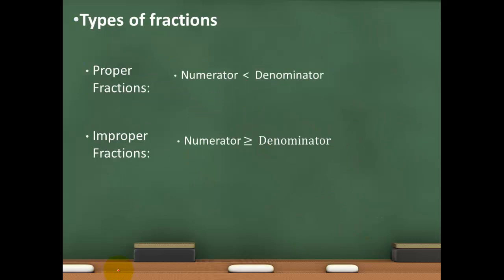I want to talk about the types of fractions we can have. There are two types. We have proper fractions, where the numerator is smaller than the denominator. For instance, two-fifths — 2 is less than 5, so it's a proper fraction; the part is smaller than the whole. The other type is improper fractions, where the numerator is greater than or equal to the denominator — for instance, 5 over 2: you have 5 parts and 2 wholes.